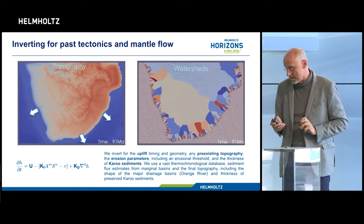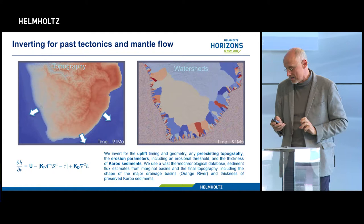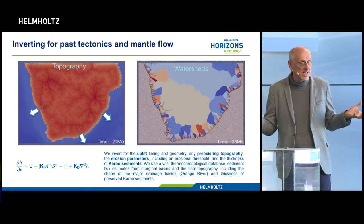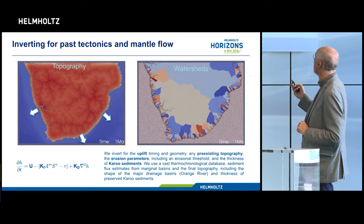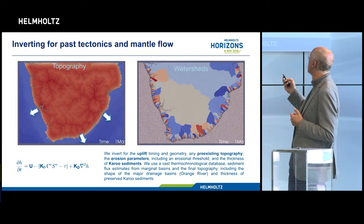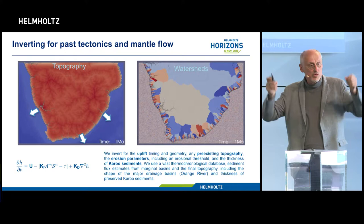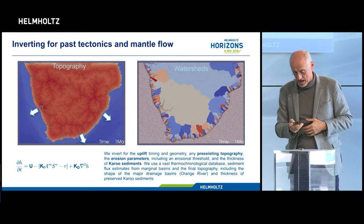Showing only the best-fitting model, one thing that is quite certain from the inversion is that Southern Africa's anomalous topography is very old — it was created between 60 and 90 million years ago, and since then it has remained essentially static. Our model can also reproduce the very large watershed corresponding to the Orange River, which drains the entire subcontinent. The reason is that it is surrounded by a moat — a region of high elevation that funnels all the water into this large catchment.